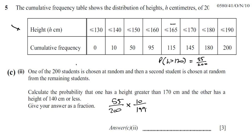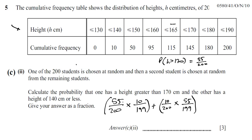The other scenario is that the first student picked has a height of 140 centimeters or less, which would be 10 over 200, and the second student picked has a height greater than 170 centimeters, which would be 55 over 199. Notice that these two expressions have exactly the same value.